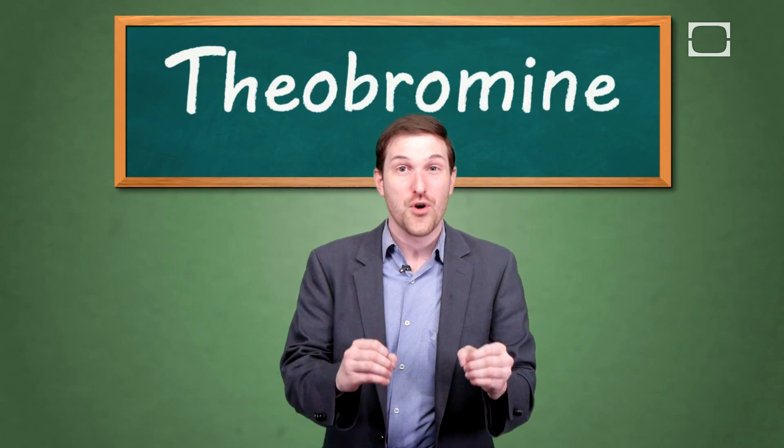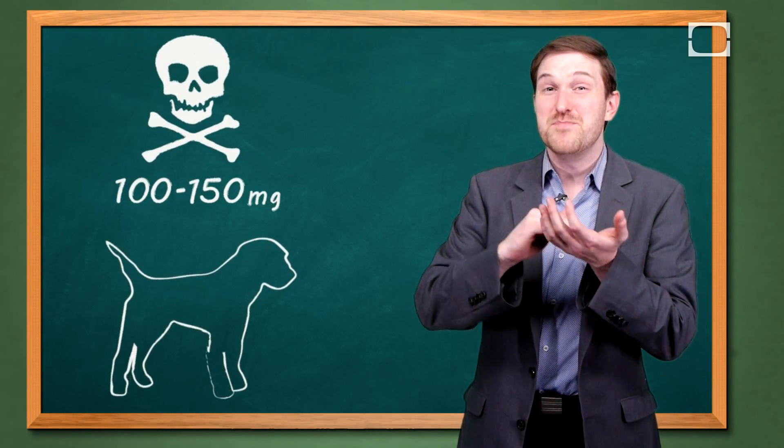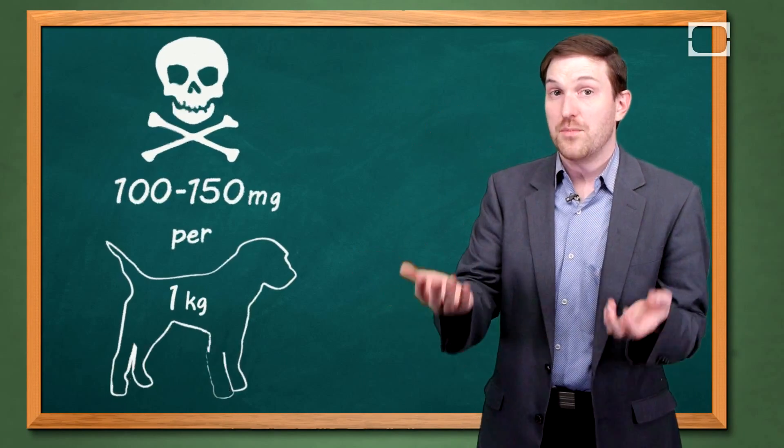It's a good question, and when we talk about death by chocolate for canines, what we're really talking about is a chemical inside of chocolate called theobromine, and it's kind of like caffeine. This becomes toxic to dogs at about 100 to 150 milligrams per kilogram of body weight.